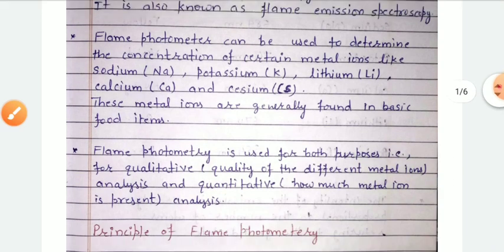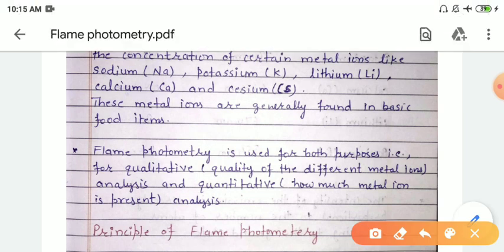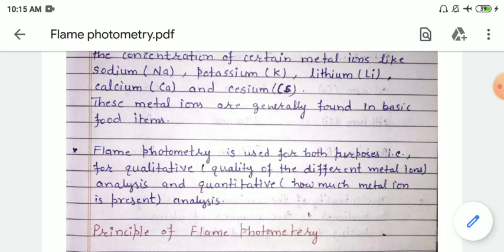Flame photometry is used for both qualitative analysis and quantitative analysis. In qualitative analysis, we identify the different metal ions present, and in quantitative analysis, we determine how much concentration of the metal ion is present in the sample.